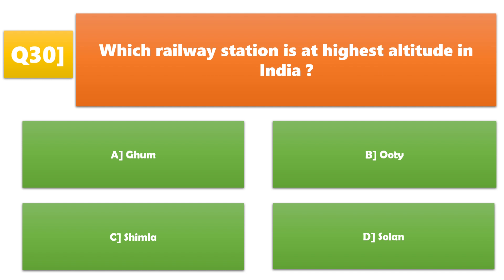Which railway station is at the highest altitude in India? A. Ghum, B. Ooty, C. Shimla, D. Salem. A. Ghum is the correct answer.